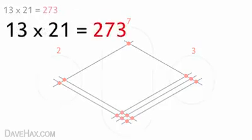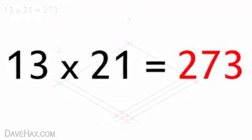13 times 21 is 273. Pretty cool, huh? So here's another quick example.